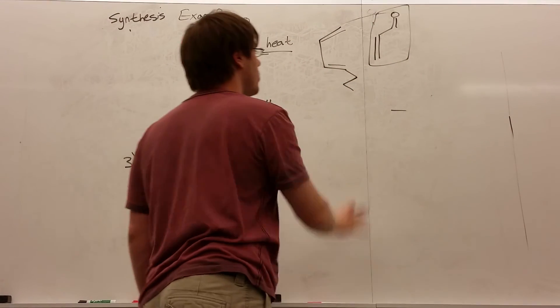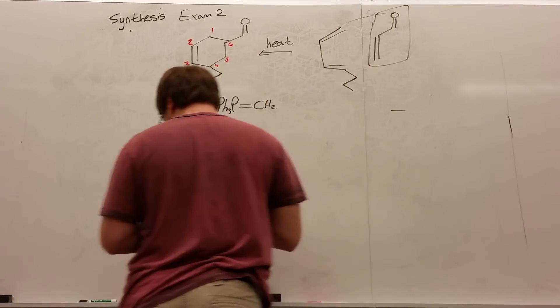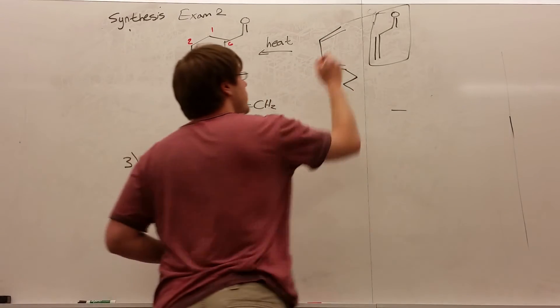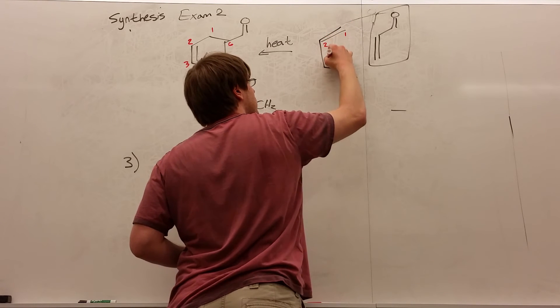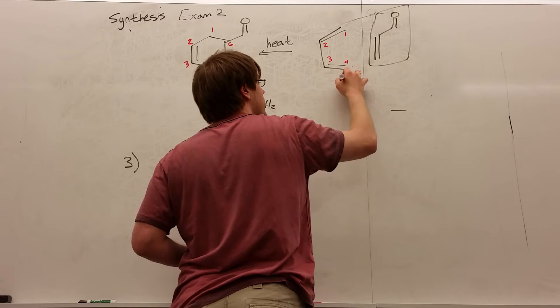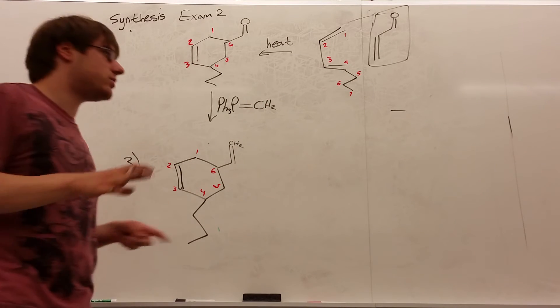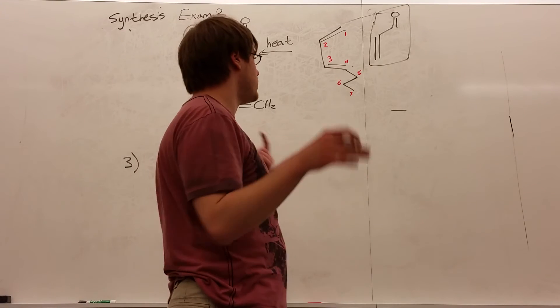So this piece right here is 4 carbons or less. I'm done with it. But this is 7 carbons long. Now, if you feel more comfortable going about this the rest of the way like we did for the Diels-Alder-based syntheses where you had to do the elimination and the OH cutting mechanism, that's fine. But there's a shortcut here using the Wittig.